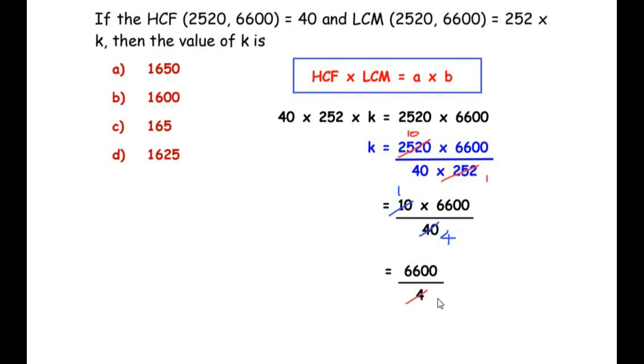To divide 6600 by 4: 4 goes into 6 once with remainder 2, making 26. 4 goes into 26 six times giving 24 with remainder 2, making 20. 4 goes into 20 five times, leaving remainder 0. So the value of k is 1650.